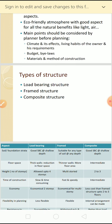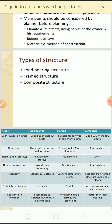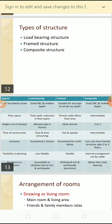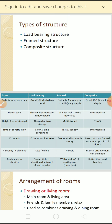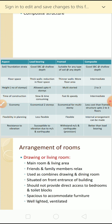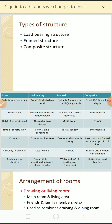The next topic is type of structure, which you have already studied before. There are three different types of structures: load bearing structures, framed structures, and composite structures. There is a table comparing these different types of structure - load bearing structure, frame structure, and composite structure - by different aspects.